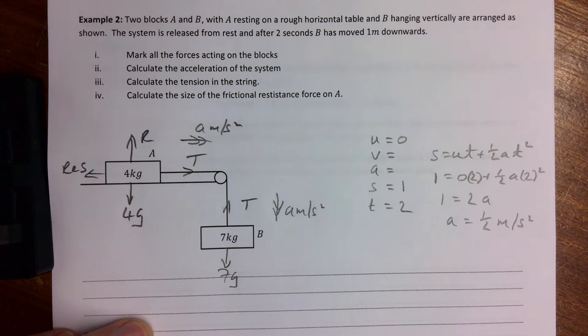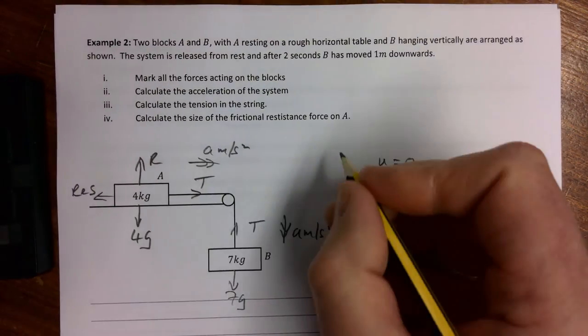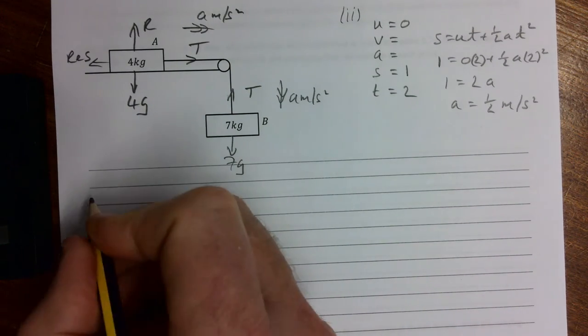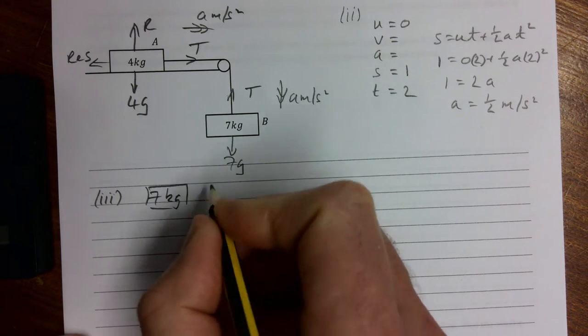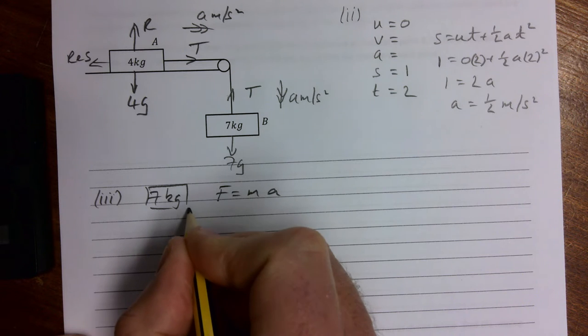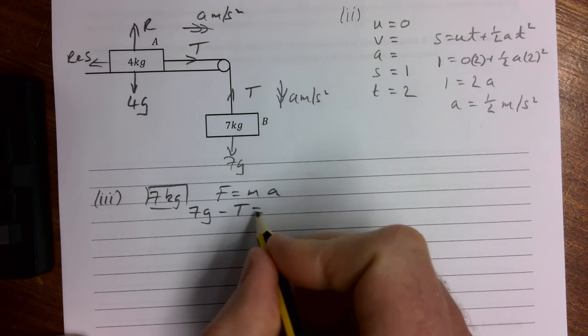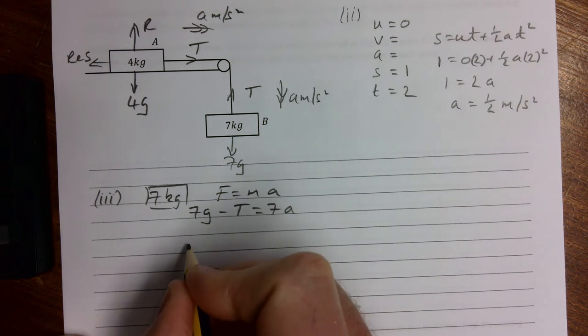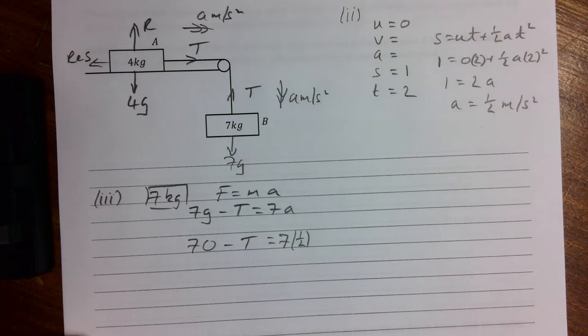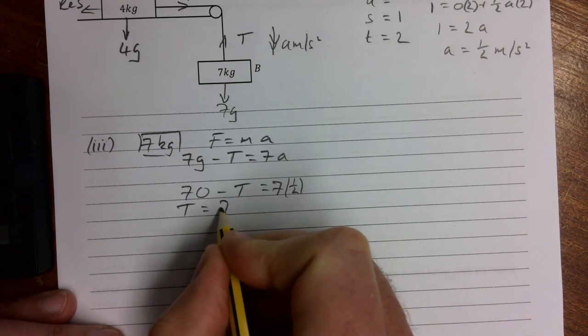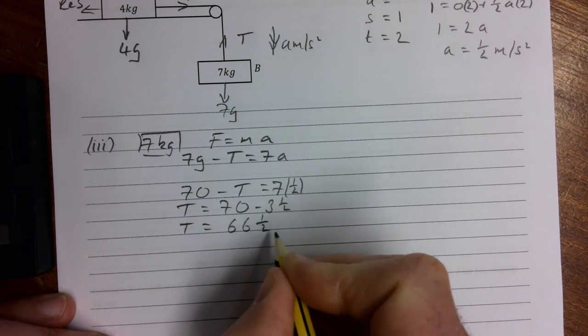It then says calculate the tension in the string. With this case now we're going to do F equals MA. So that was part 1, this was part 2, and finding the tension in the string is going to be part 3. We'll do F equals MA for both. First of all the 7 kilogram force, F equals MA, and that's going to be 7g take away T equals 7a. That means we're going to have 70 take away T equals 7 times a half, so that means we're going to have T equals 70 take away 3.5 and our tension then equals 66.5 newtons.